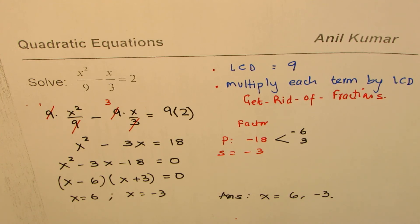I hope the steps are very clear. Let's go through them. Whenever you have fractions, find the lowest common denominator. Multiply each term by lowest common denominator, thereby getting rid of fractions. And then you can use quadratic formula or you can factor the quadratic equation and get the answer.